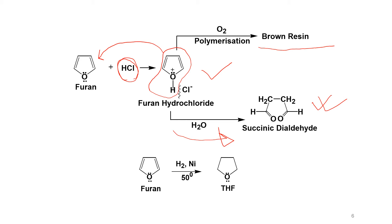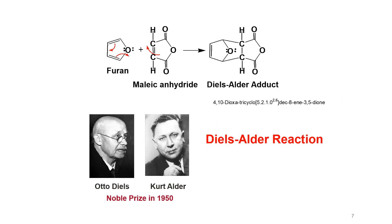Furan can also be reduced. When furan reacts with hydrogen in the presence of a metal catalyst, it is reduced to tetrahydrofuran (THF). Although furan normally undergoes electrophilic substitution as an aromatic compound, under certain conditions it also undergoes reduction. Furan also undergoes Diels-Alder reactions because it is a conjugated diene; when a suitable dienophile is present, a Diels-Alder adduct is produced.